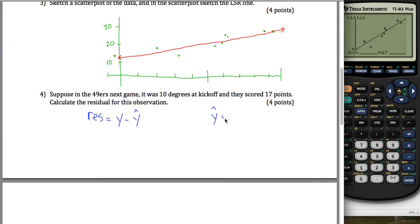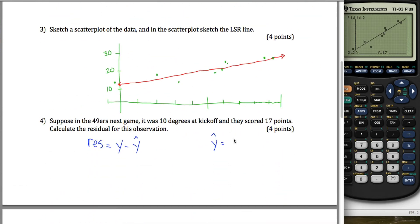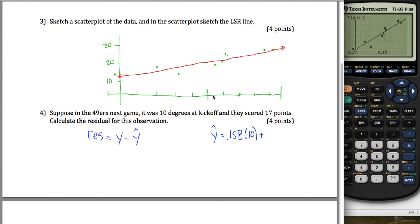And we can figure out the predicted value by taking this x and putting it into my least squared equation. So I take 0.158, multiply it by 10, and then add 12.5. So this is 1.58 plus 12.5, which is equal to 14.08. They actually scored 17 points. I predicted them to score 14.08 points, so my residual is 2.92 points. In other words, they scored 2.92 points more than I expected them to score based on how cold it was.